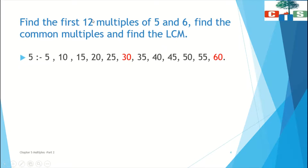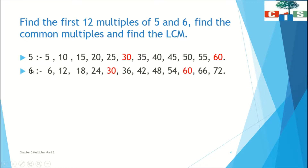The first 12 multiples of 5 are: 5, 10, 15, 20, 25, 30, 35, 40, 45, 50, 55, and 60. These are the first 12 multiples of 5 — this is the table of 5. Now the multiples of 6 are: 6, 12, 18, 24, 30, 36, 42, 48, 54, 60, 66, and 72.